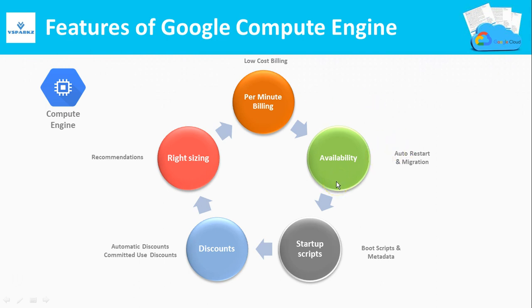Next is Availability. Availability in Google is higher with the features of Auto Restart and Migration. You can also run startup scripts in your virtual machines. Coming to discounts, Google offers two kinds of discount models. If you are running a VM on-demand without opting for discounts, Google will automatically give you discounts based on usage — this is called Automatic Discounts, also known as Sustained Use Discounts. The second is Committed Use Discounts, where you reserve a VM for a certain duration, such as months or years, and get a reservation discount only if you commit.